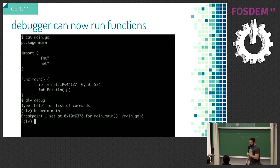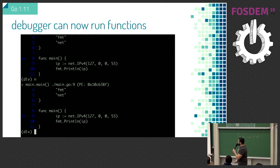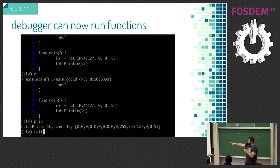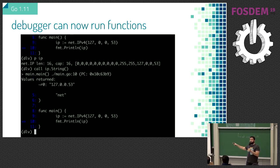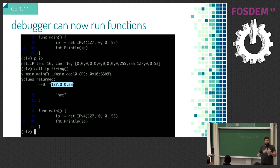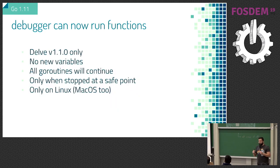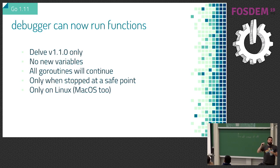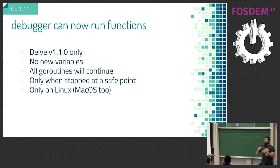The debugger can now run functions. When printing an IP address previously you got random internal representation. Now you can call the String method in the debugger and get a readable value. It is limited though — there are many things you cannot do inside that function. It only officially works on Linux, though the screenshot shown is from a Mac. Constraints include: you cannot create new variables, you cannot stop all other goroutines, and you must stop at a breakpoint into a safe point.